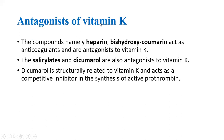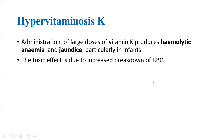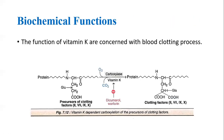Now we will be discussing the antagonists of vitamin K. The compounds heparin and bishydroxycoumarin are anticoagulants and therefore antagonistic to vitamin K, because heparin is an anticoagulant while vitamin K helps in blood coagulation. Additionally, salicylates and dicumarol are also antagonists of vitamin K. Dicumarol is structurally related to vitamin K and acts as a competitive inhibitor in the synthesis of active prothrombin. As noted previously, dicumarol is a competitive inhibitor that stops the activation of prothrombin and other clotting factors.